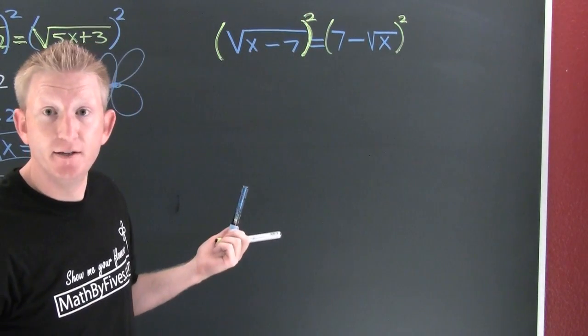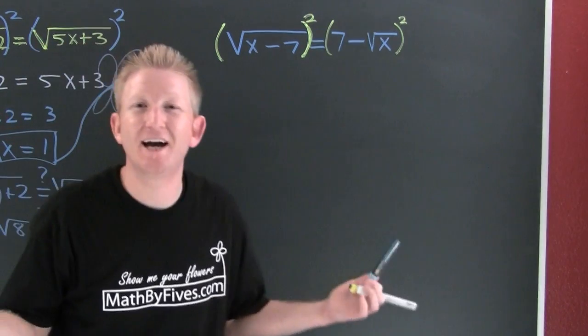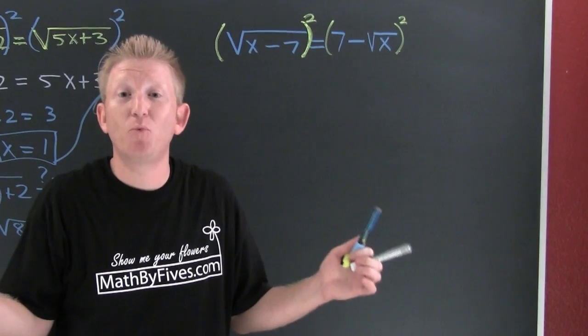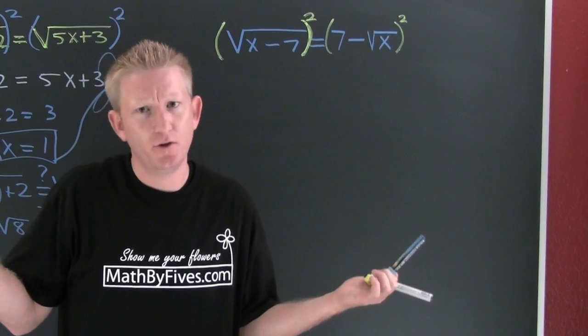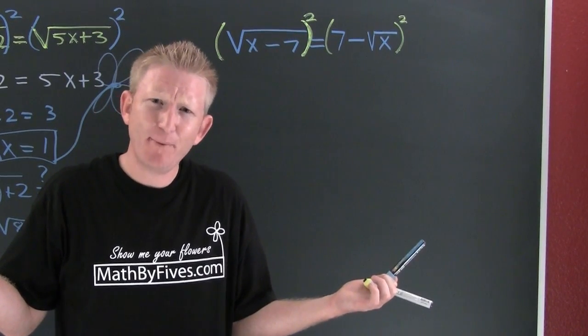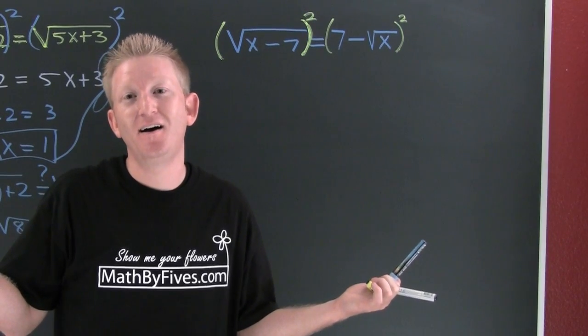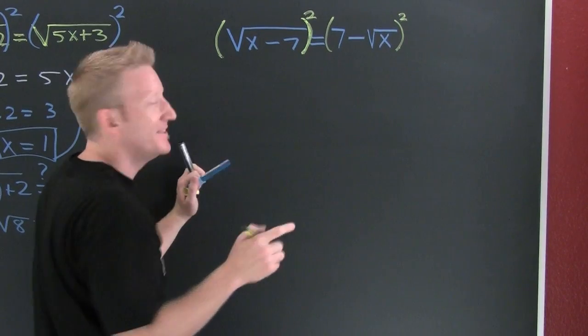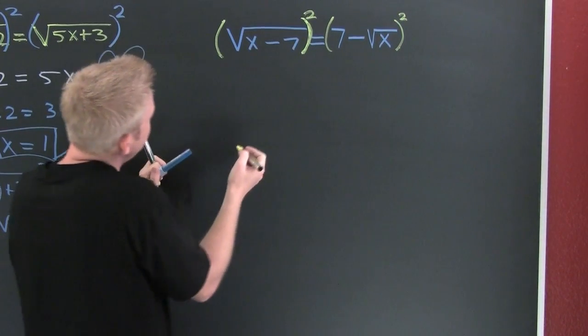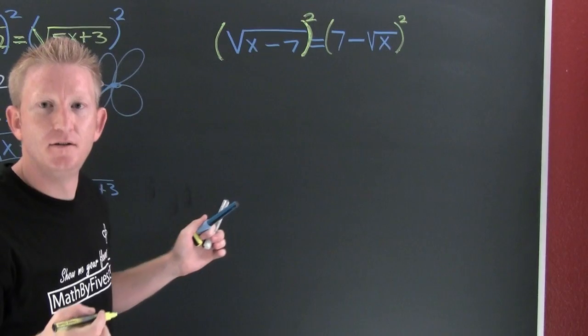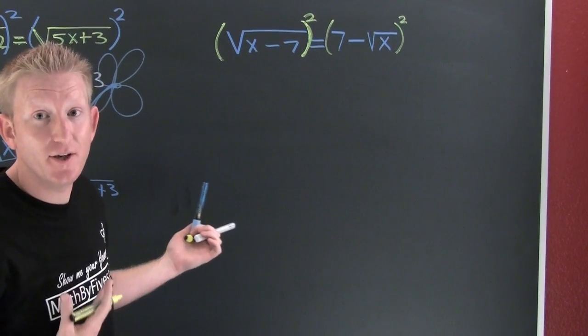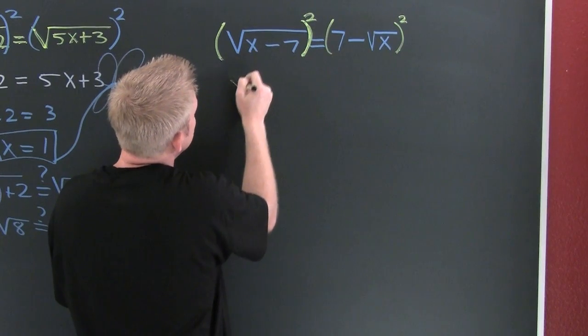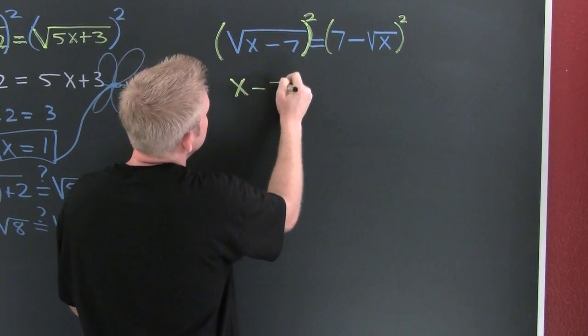Squaring a root gives me... the more light I add in here I get whiter and whiter, I'm really not this white in real life. Maybe I shouldn't wear a black shirt, my background's dark, you have to wear dark colors. Squared this side, this gives you x minus seven.